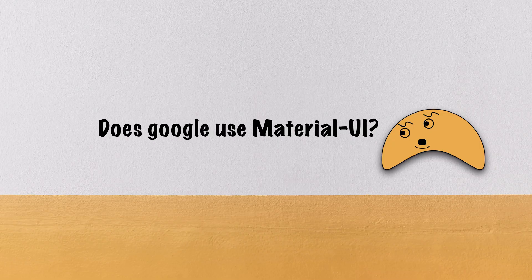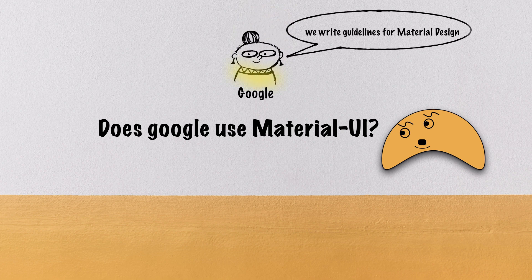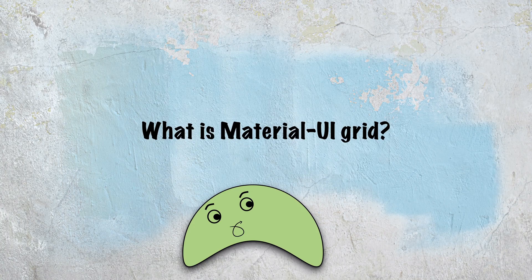Next: does Google use Material UI? Not really. Teams at Google provide guidelines and specifications which are turned into implementations by the Material UI library. Google has their own implementation of the design system and has a React component library to build React apps.